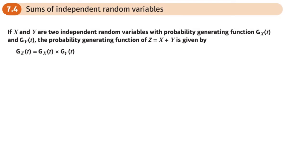This is the last section of probability generating functions, covering the sum of independent random variables. If we have two independent random variables — meaning one event is not affecting another — and we want to find the probability generating function of one and the other, we multiply their probability generating functions.